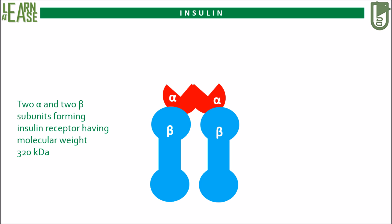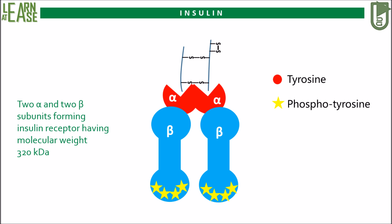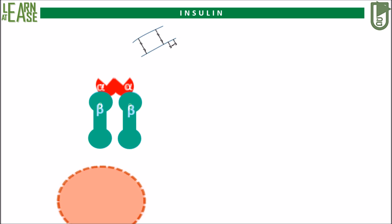The insulin receptor contains two alpha and two beta subunits, constituting 320 kiloDalton molecular weight in total. The beta subunit possesses several tyrosine residues. When insulin binds to the receptor, the alpha subunits drive a change in the conformation of the beta subunits, causing autophosphorylation of tyrosine residues in the beta subunit. Let's get back to the original animation.